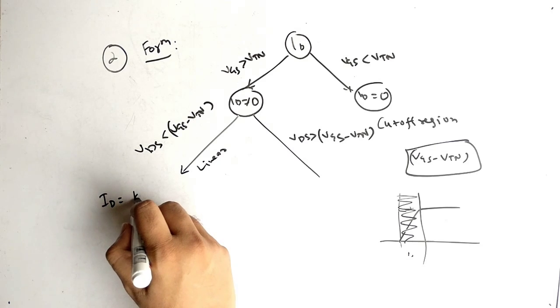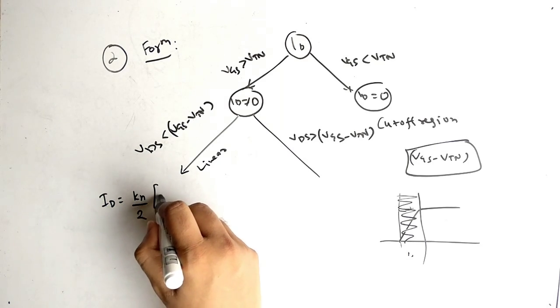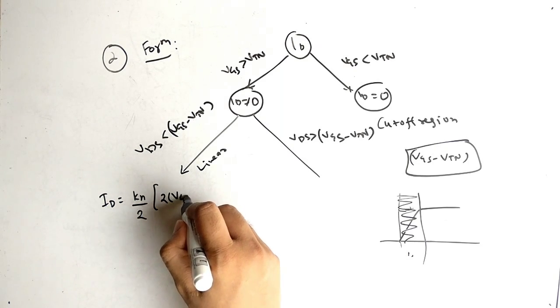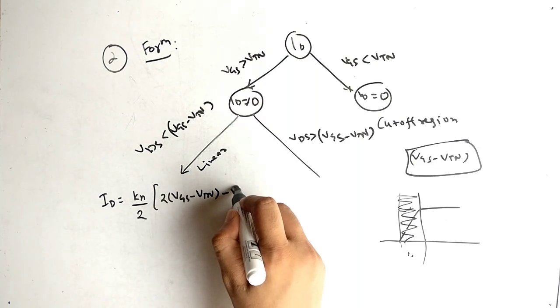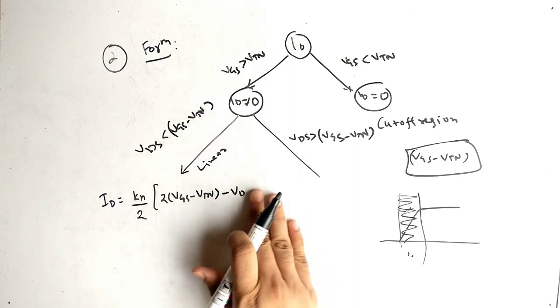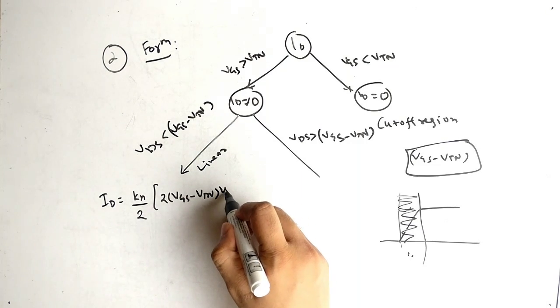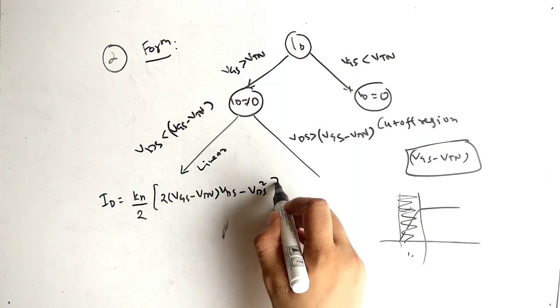The formula for the linear region is: ID = (KN / 2) × [2(VGS − VTN) × VDS − VDS²].